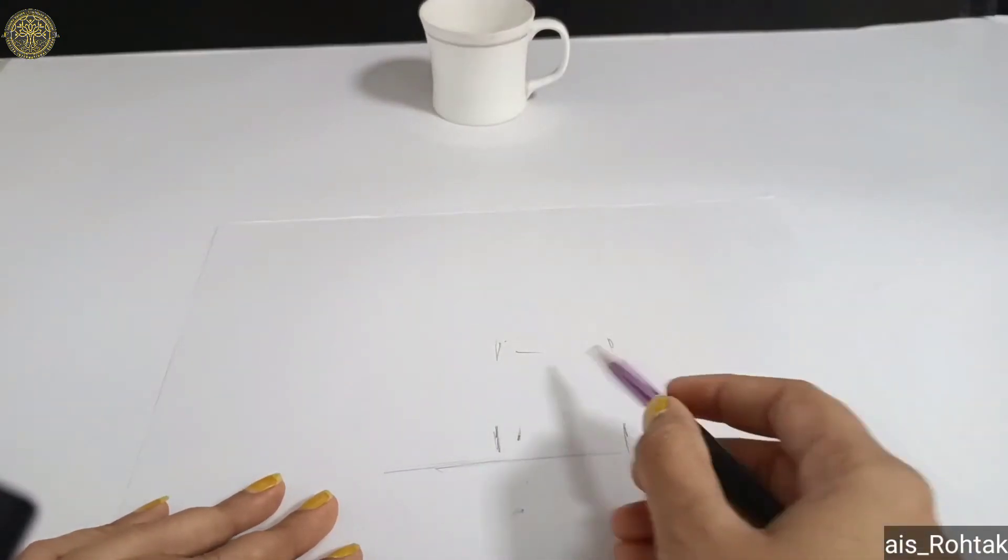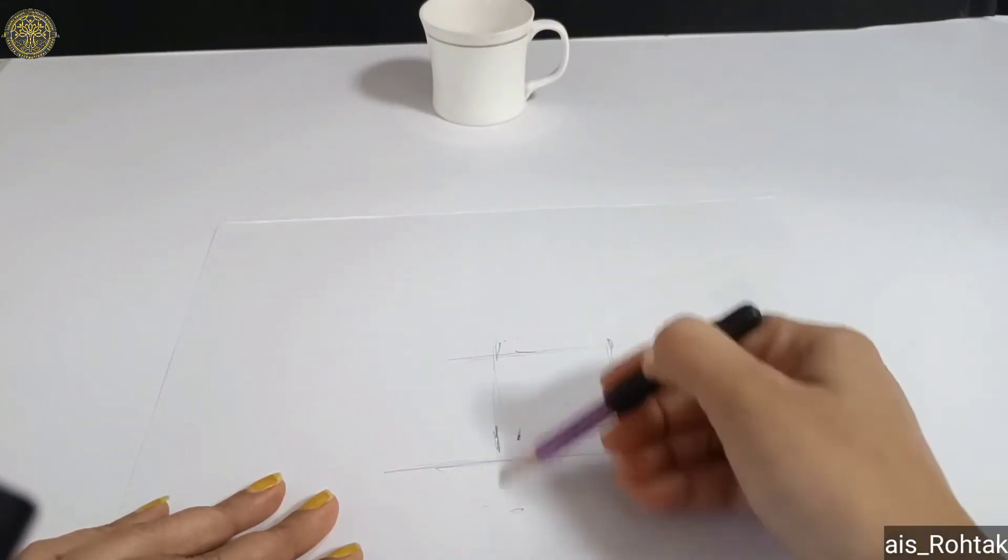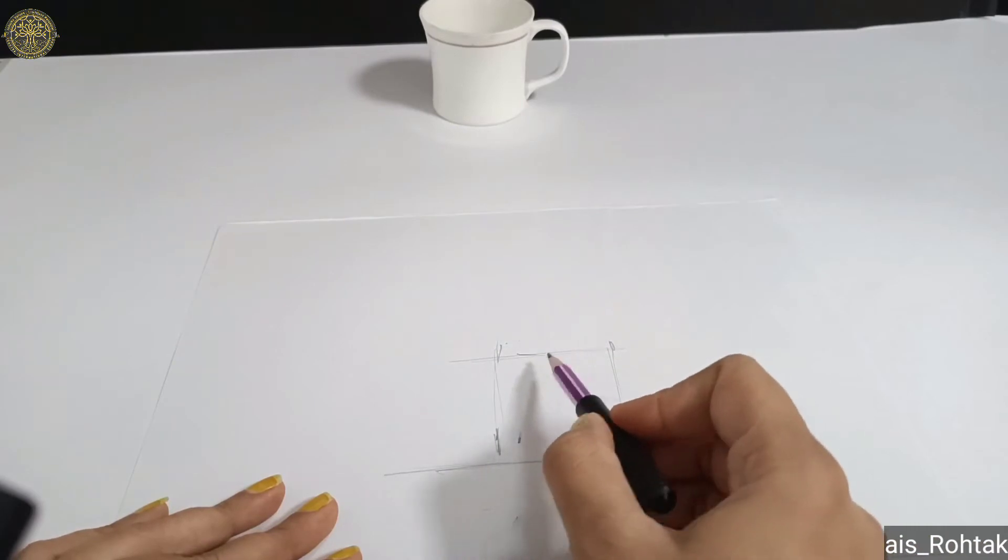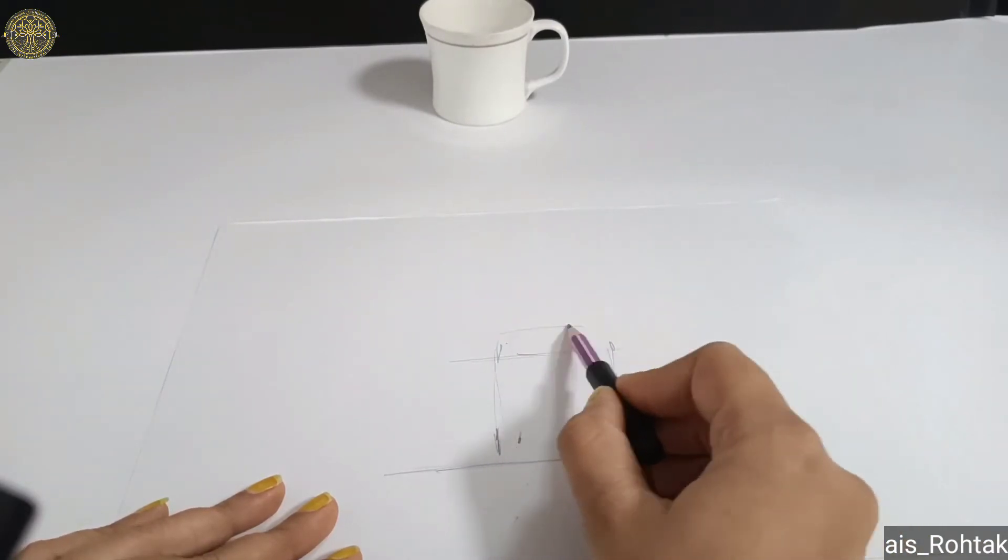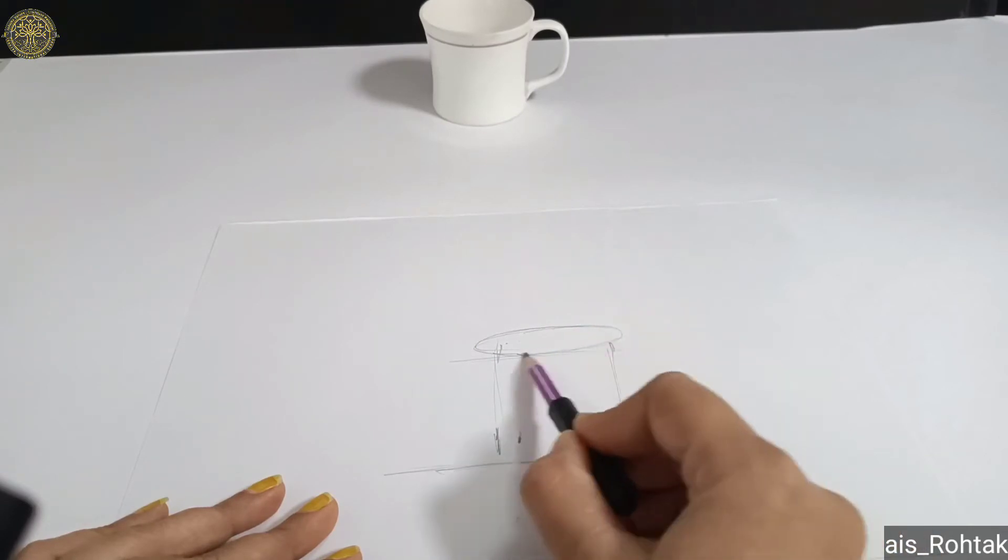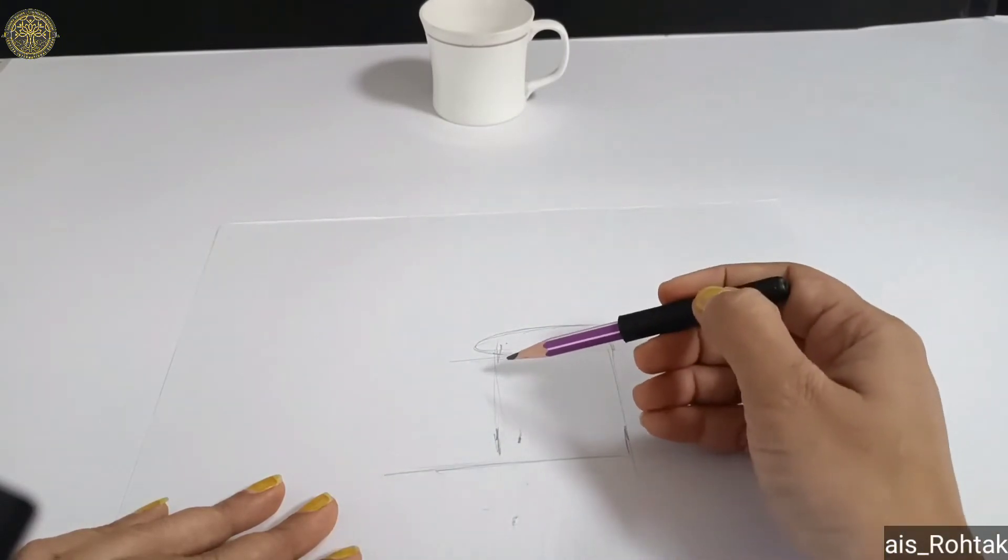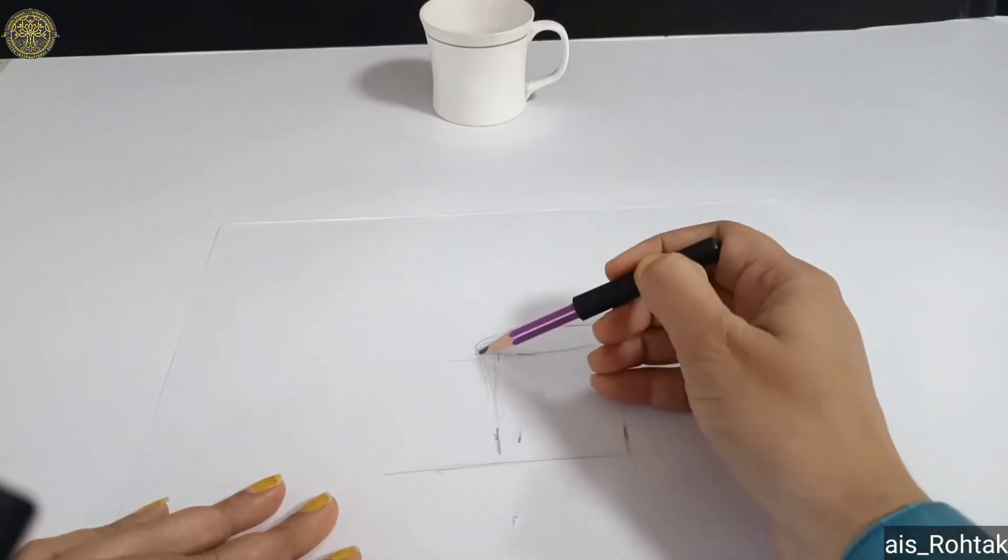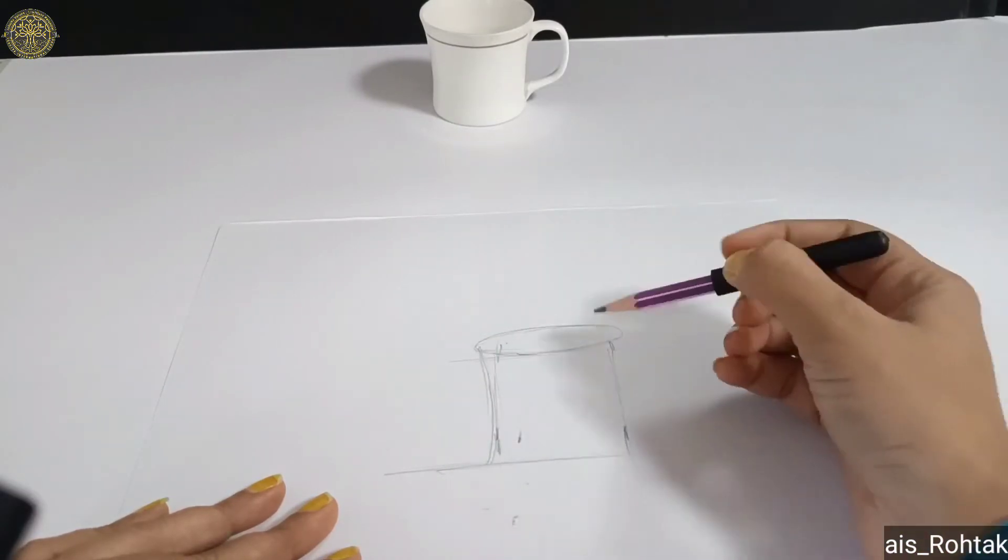Our measurement. Now we join all the lines. This is the size of our cup we are going to draw on the sheet. Then we have to draw an oval shape, that is the upper portion of the cup, and then draw the side lines of the cup.